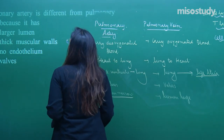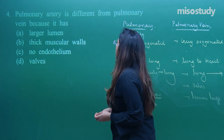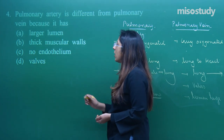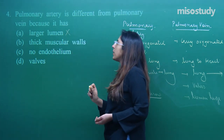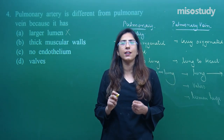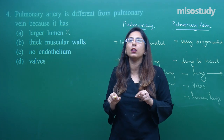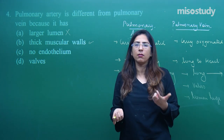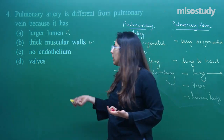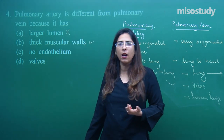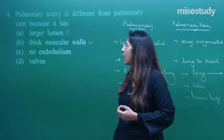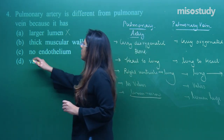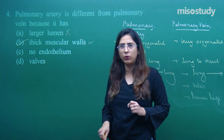Coming back to the question: pulmonary artery has a larger lumen — no, it has a narrow lumen, so that option is incorrect. Thick muscular walls — yes, they have thick muscular walls, which is why the space inside is very narrow. So that option is right. No endothelium — endothelium is present in both. So for question number four, option B — thick muscular walls — is correct.